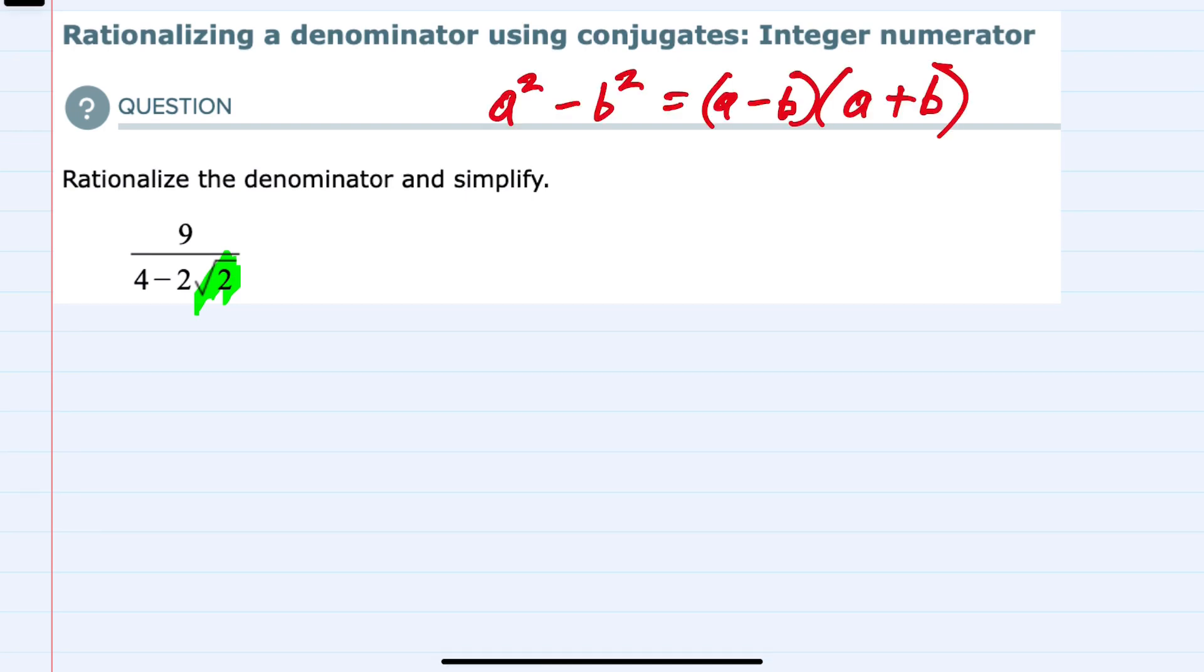And the difference of two squares says that if we have two perfect squares being subtracted, that's the same as the first one without the square minus the second one without the square times the first one plus the second one without the squares.